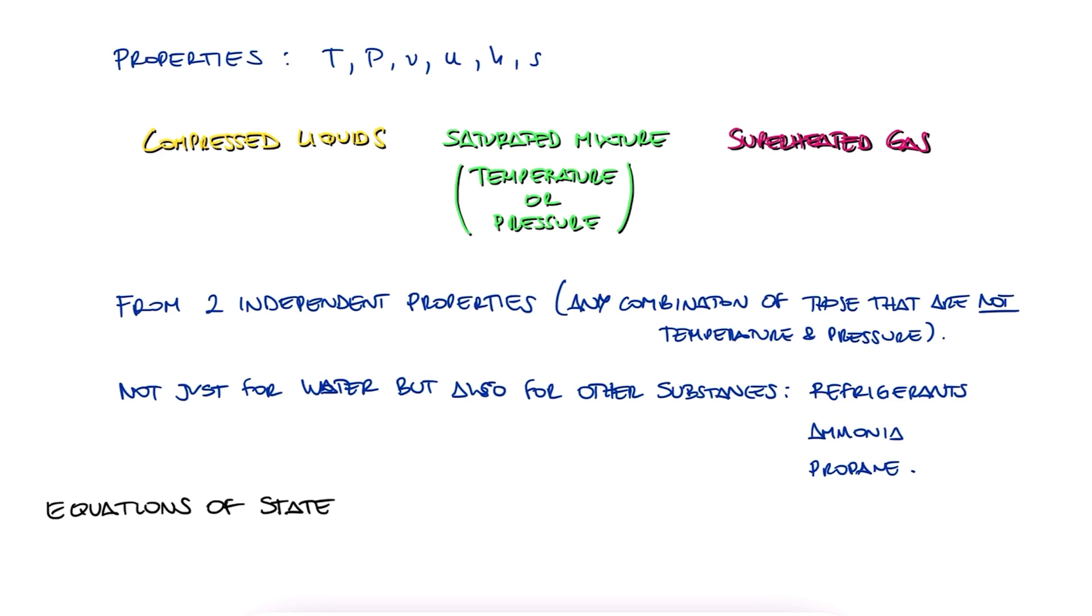Equations of state are those equations that allow us to find some of the properties without going through pages of tabulated values, interpolating, or extrapolating. In general, any equation that relates the pressure, specific volume, and temperature is an equation of state.